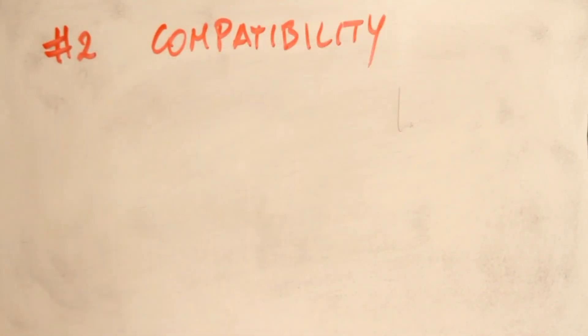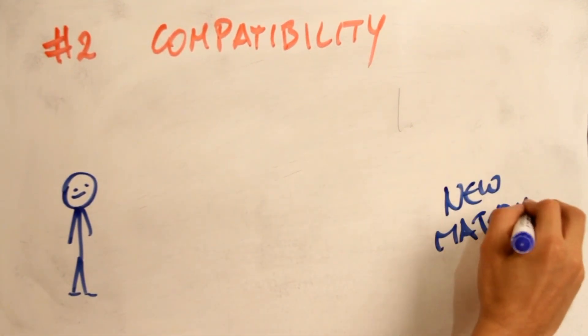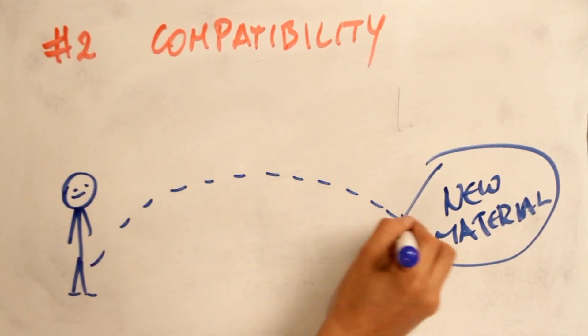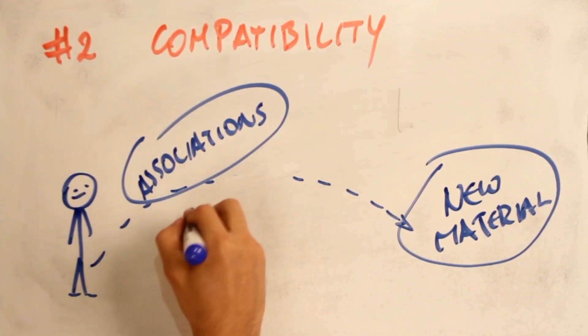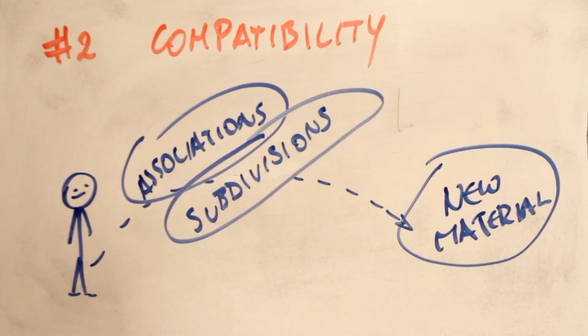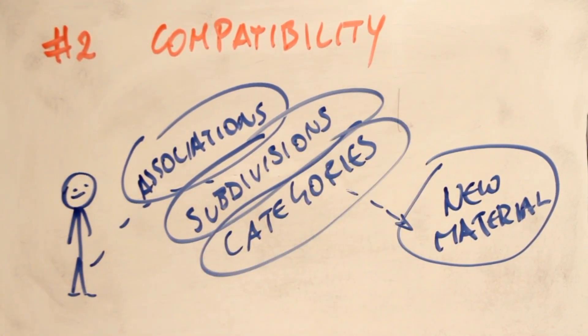Second is the compatibility problem. How do you get a child to approach new material that he is learning in such a fashion that he fits it into his own system of associations, subdivisions, categories and frame of reference, in order that he can make it his own and thus be able to use the information in a fashion compatible with what he already knows?